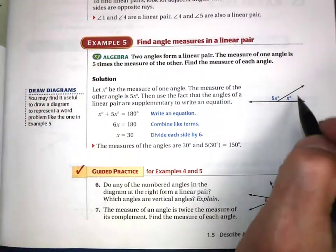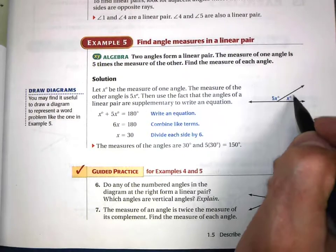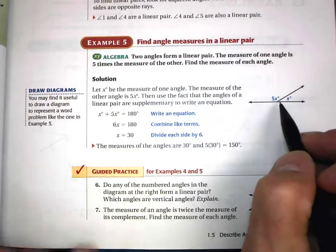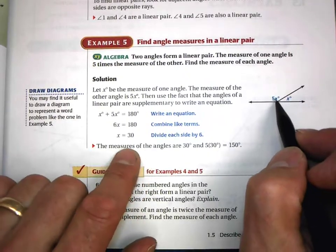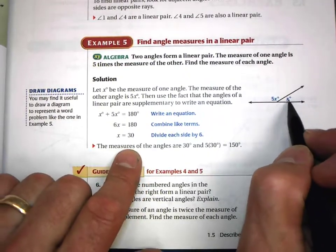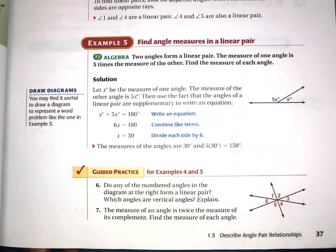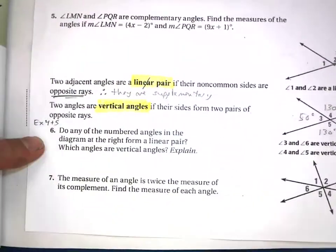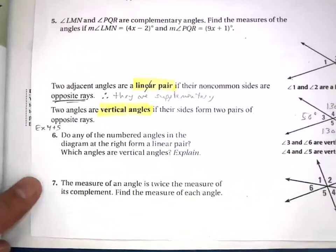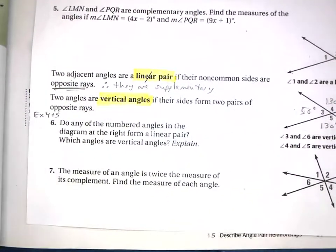Angles three and four are not vertical angles — one of the ray pairs is not truly opposite. To find the measure of angle five, set up the linear pair equation: 5x plus x equals 180. Solve for x, find the angle measure. Now do questions six and seven. Hope that was helpful!